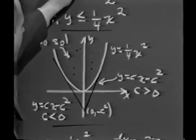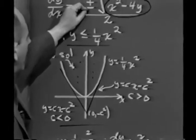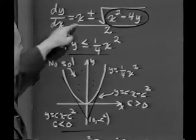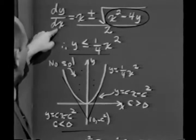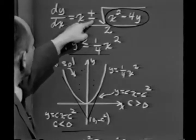By the way, the plus or minus sign here is relatively unimportant. What it means is dy dx is a double-valued function. We would solve this in real life as two separate problems, namely,